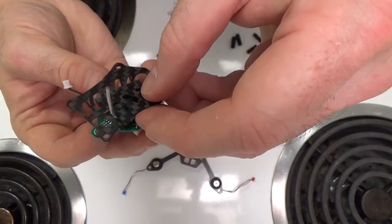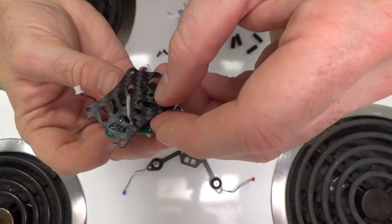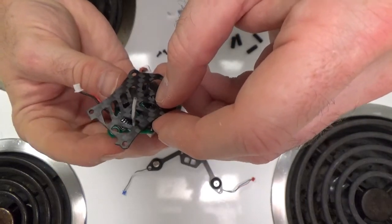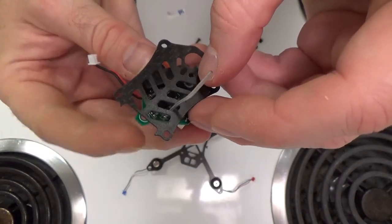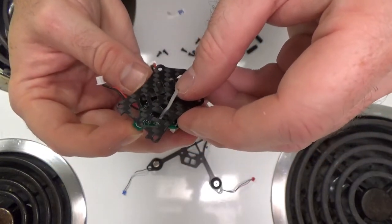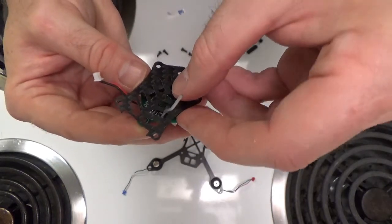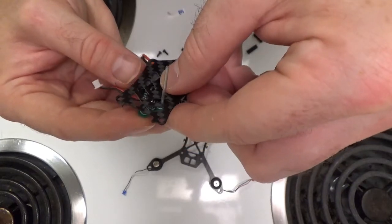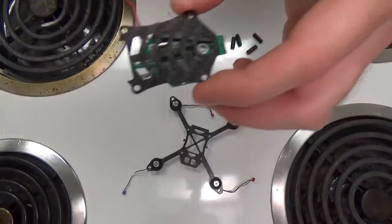Put it through there, and you want to try to get this little tab here on the front of the flight controller flush with the front of the top plate. Just try to get it centered when you stick it onto the top plate.